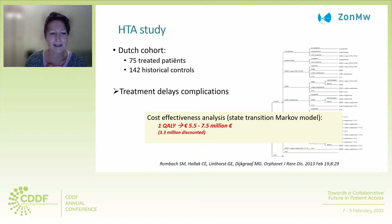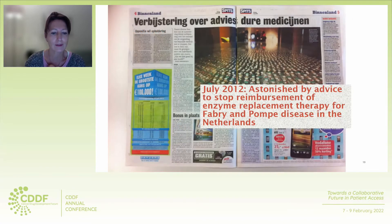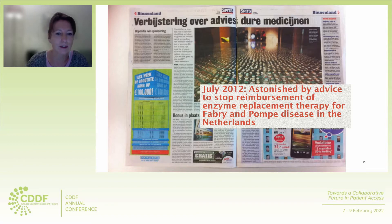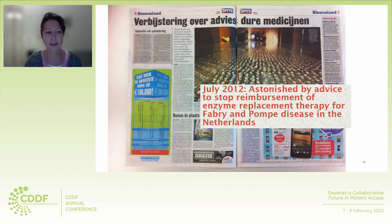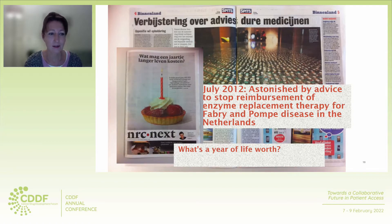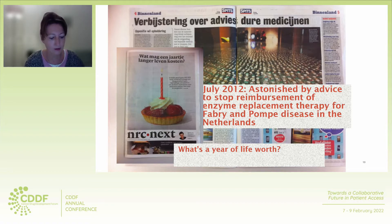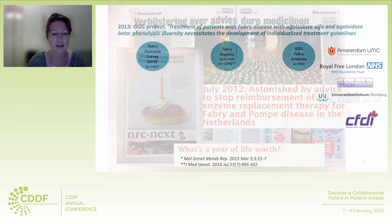That was at the beginning of discussions about what a life should be worth. There was a media uproar because the Healthcare Institute at that time had a preliminary advice to stop the reimbursement of enzyme replacement therapy — not just for Fabry disease, but also for Pompe disease in our country. That raised questions like what is a year of life worth, and set the scene that these kinds of treatments should be monitored better and that we should have the ability to stratify patients and more selectively give treatment.